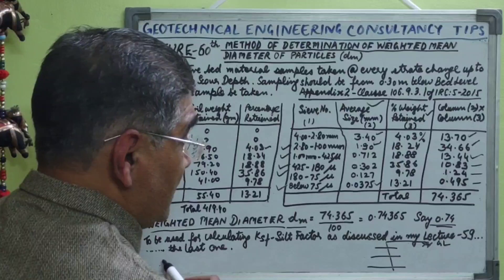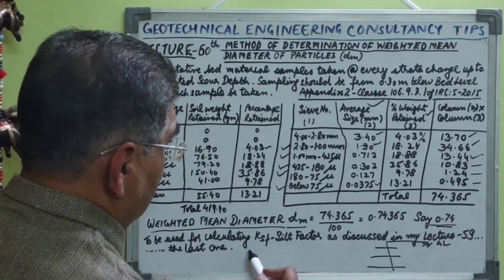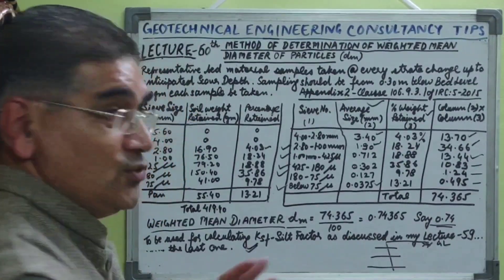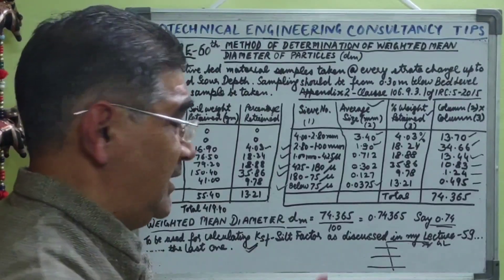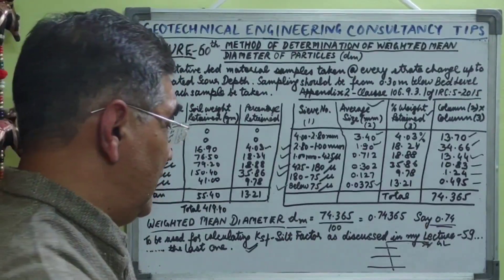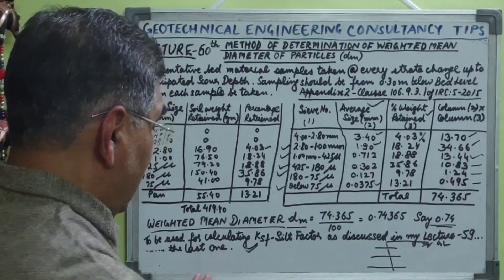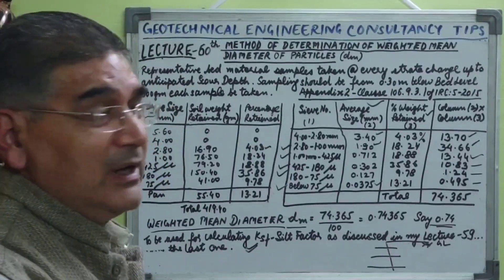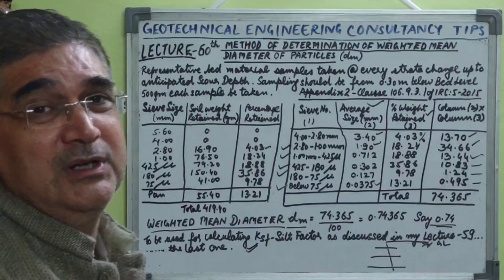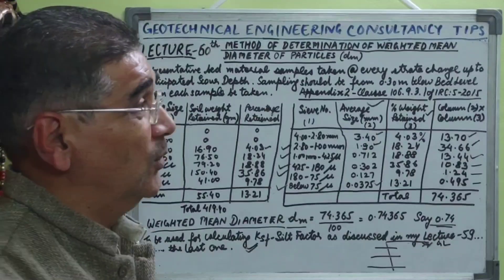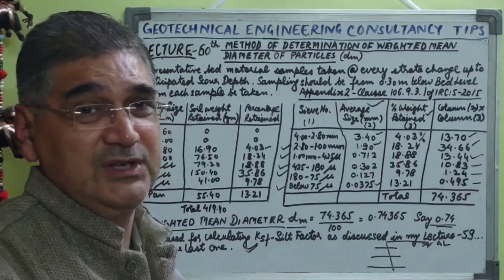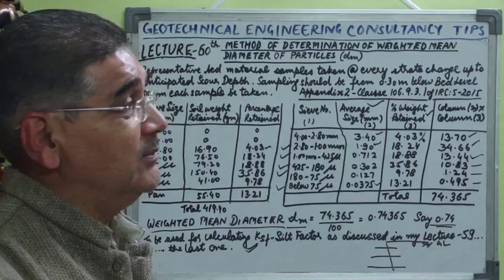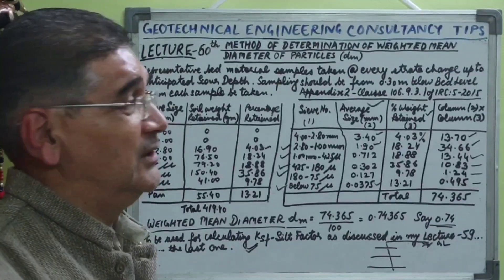This dm value is also used for calculating the silt factor f, using the formula f = 1.76 × √dm. Further, this silt factor is used in the mean scour depth formula: dsm = 1.34 × (db² / f)^(1/3), where db is the design discharge.